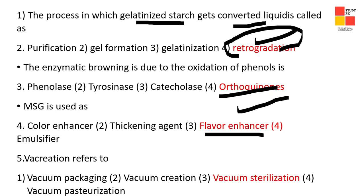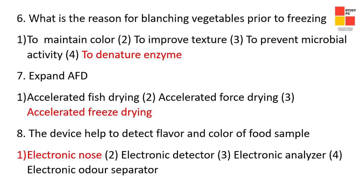Question number five: restoration refers to vacuum sterilization. Next: what is the reason for blanching vegetables prior to freezing? The right option is to denature enzymes.